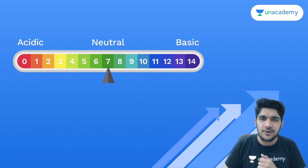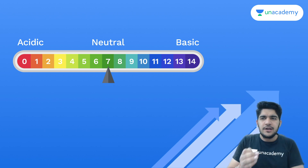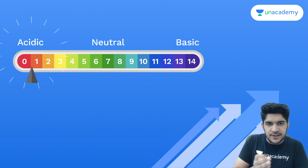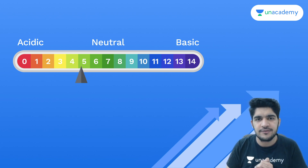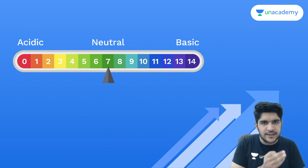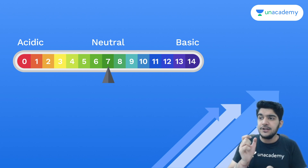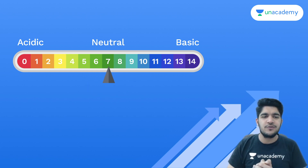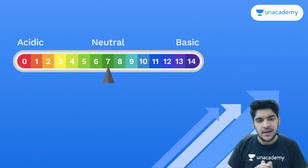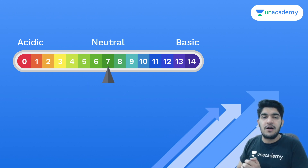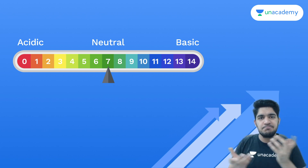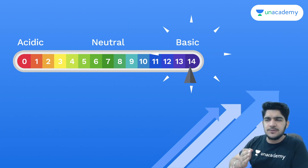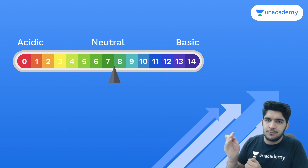So here we'll test cold drink. If the pH of the cold drink is acidic, then pH will be lower than 7. If cold drink is neutral, then pH will be exactly 7 — the mid of the pH value range. And if cold drink is basic, then pH will be more than 7.